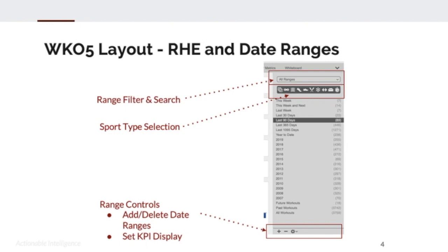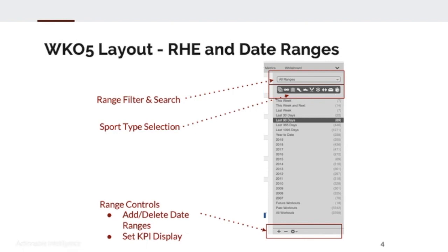Let's drill down on the right-hand explorer, or RHE, and data ranges. There are four key functions. First, we have a filter and search range. Then we have the sports selection range — very important because this allows you to select which sports you want in your data. If you're a multi-sport athlete, you can select all data or specific data formats. We also have the selection of default time ranges, and on the bottom some basic controls — you can add custom time ranges or delete existing ones, plus a gear wheel to set KPI information.